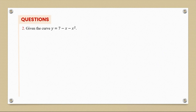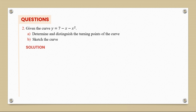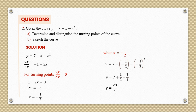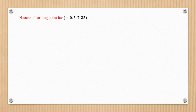Next question: given the curve y = 7 - x - x², determine and distinguish the turning points, and sketch the curve. Differentiating gives dy/dx = -1 - 2x. For turning points dy/dx = 0, giving x = -1/2. When x = -1/2, y = 29/4, so the turning point is (-0.5, 7.25).